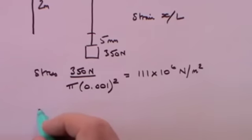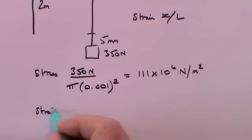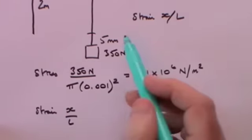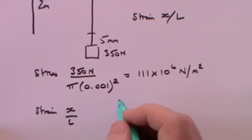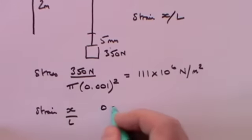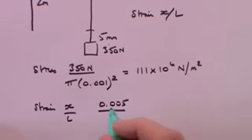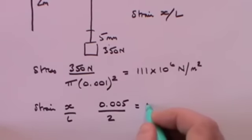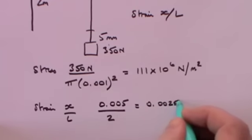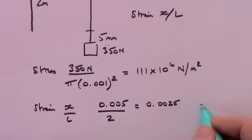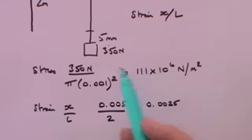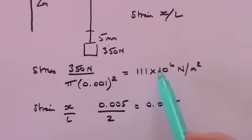What is the strain? Strain is extension over original length. The extension is 5 millimetres, which is 0.005 metres, divided by the original length of 2 metres. That comes out to 0.0025, and there are no dimensions because this is a length divided by a length — it is dimensionless. So tensile stress is 111×10⁶ N/m² and tensile strain is 0.0025.